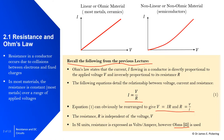Some materials, for example semiconductors, are non-ohmic materials — they don't effectively comply with Ohm's law. You can't use Ohm's law when you get this sort of relationship, because as voltage and current increase, they're not increasing at a constant rate. This is known as a non-linear relationship.